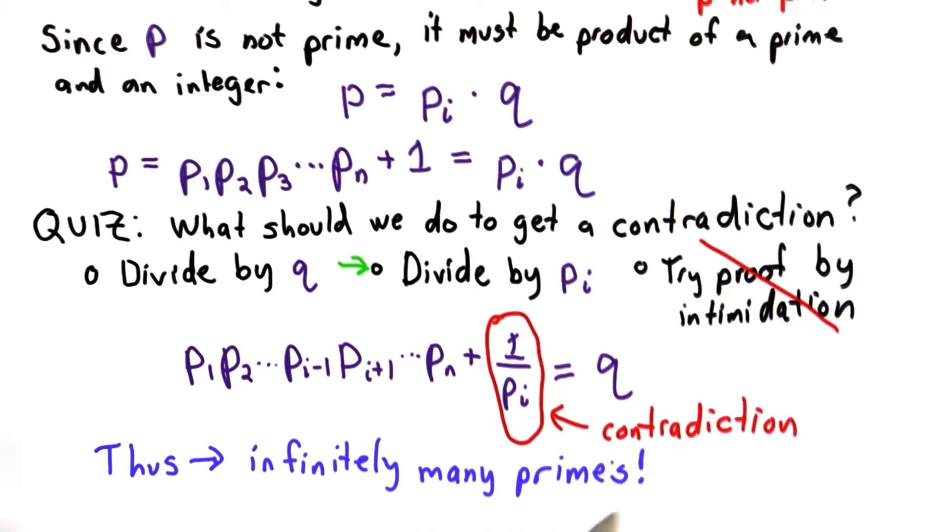Thus, we've shown that there are infinitely many primes by contradicting our assumption that there was a limited set of primes.